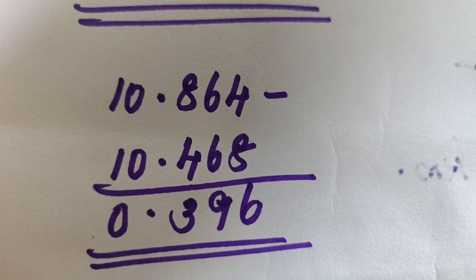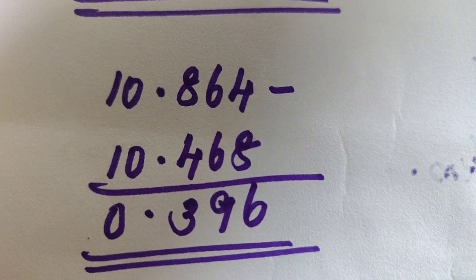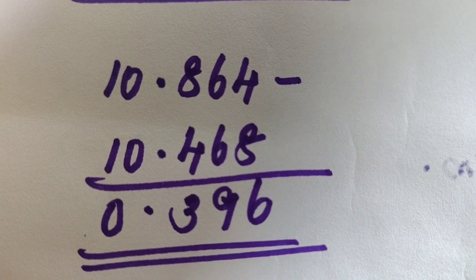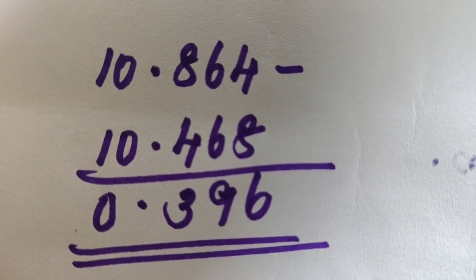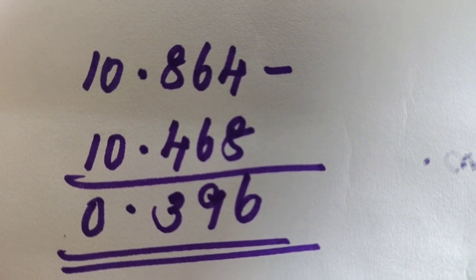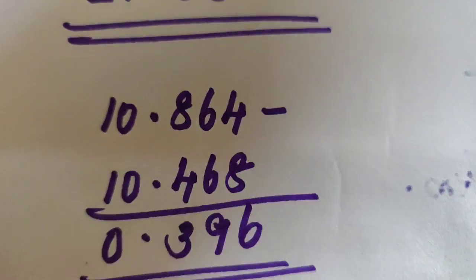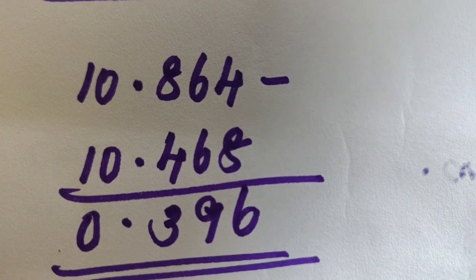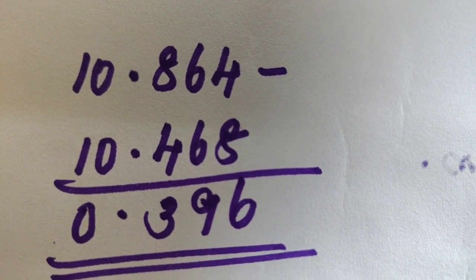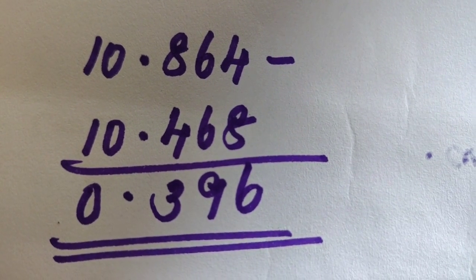Now finding the difference: 10.864 minus 10.468. Working through the subtraction: 4 minus 8, borrow to get 14 minus 8 is 6; 6 minus 6 is 0; 8 minus 4 is 4 with borrowing; continuing through gives 0.396. The difference between the two numbers is 0.396.